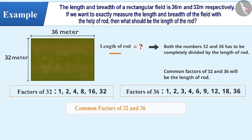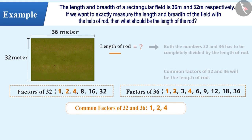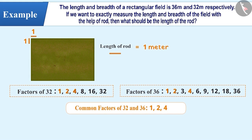Now, let's find the common factors of these numbers. 1, 2, and 4 are common among the factors of 32 and 36. Therefore, they are common factors of 32 and 36. That means if the length of the rod is 1, 2, or 4 meters, only then it can measure the length and breadth of the rectangular field completely.